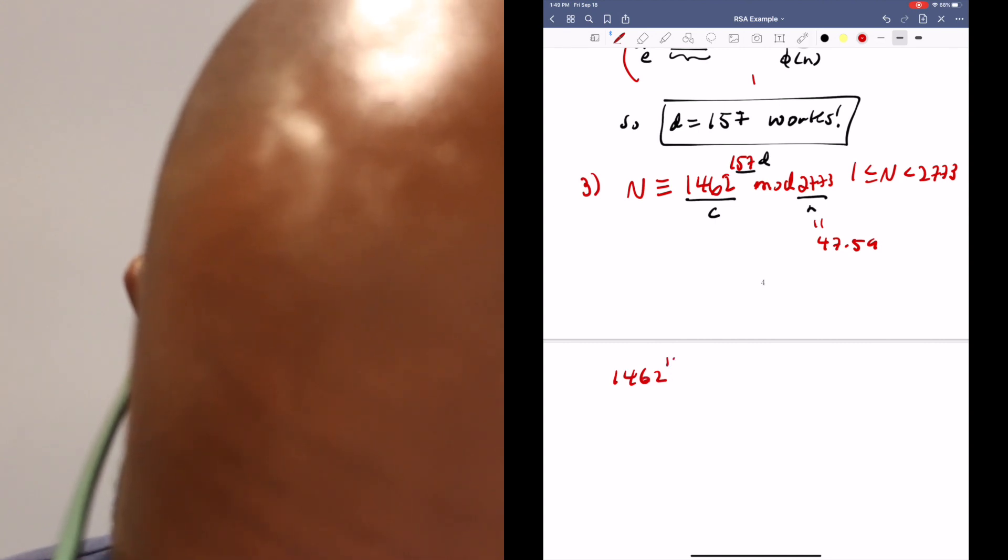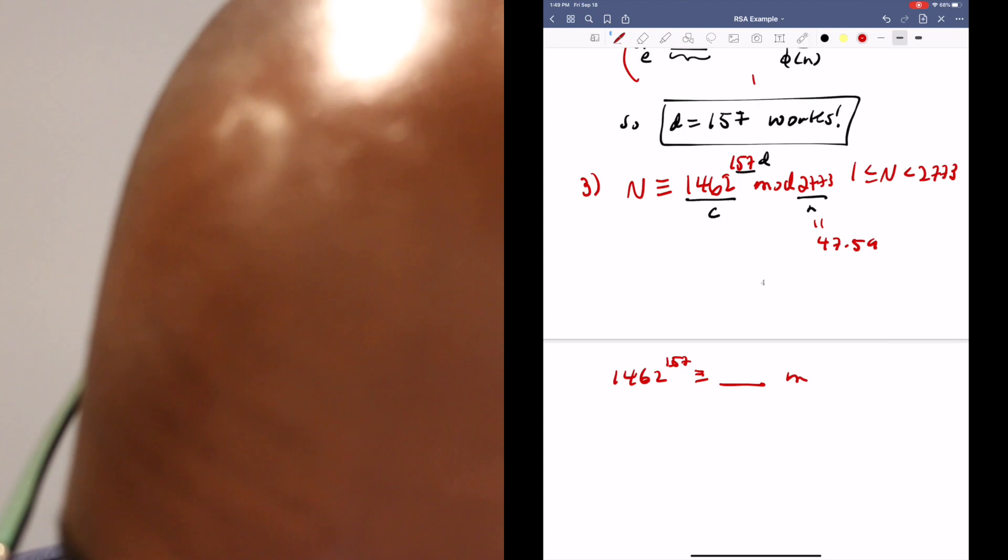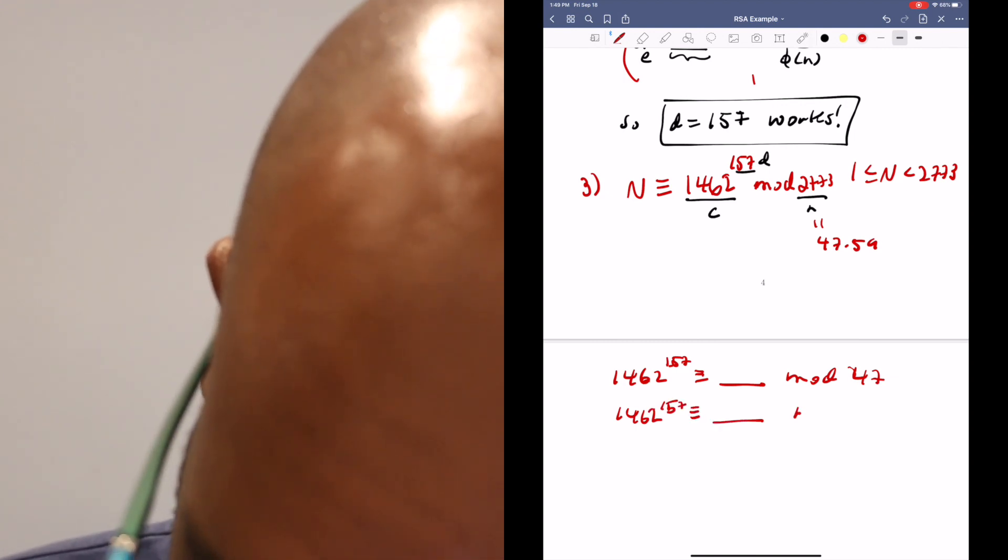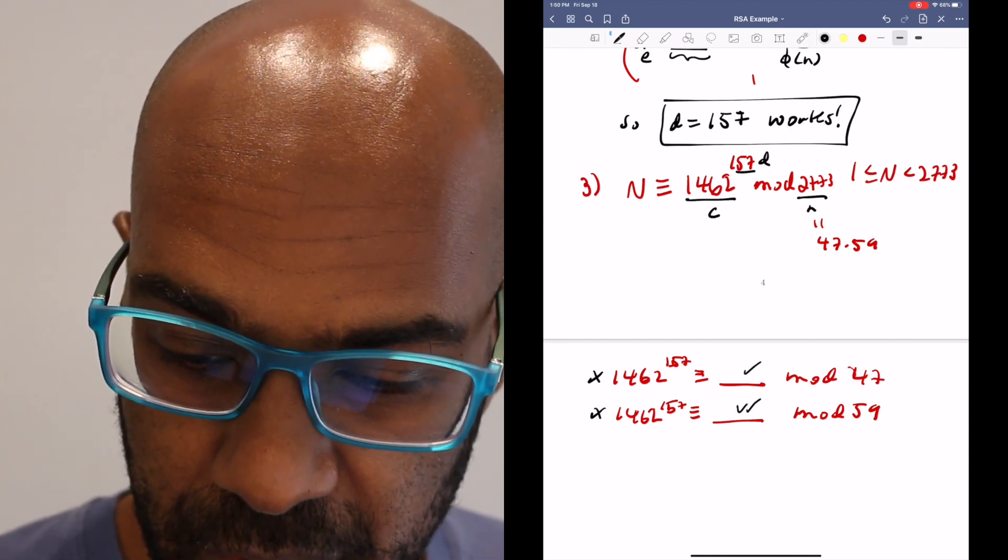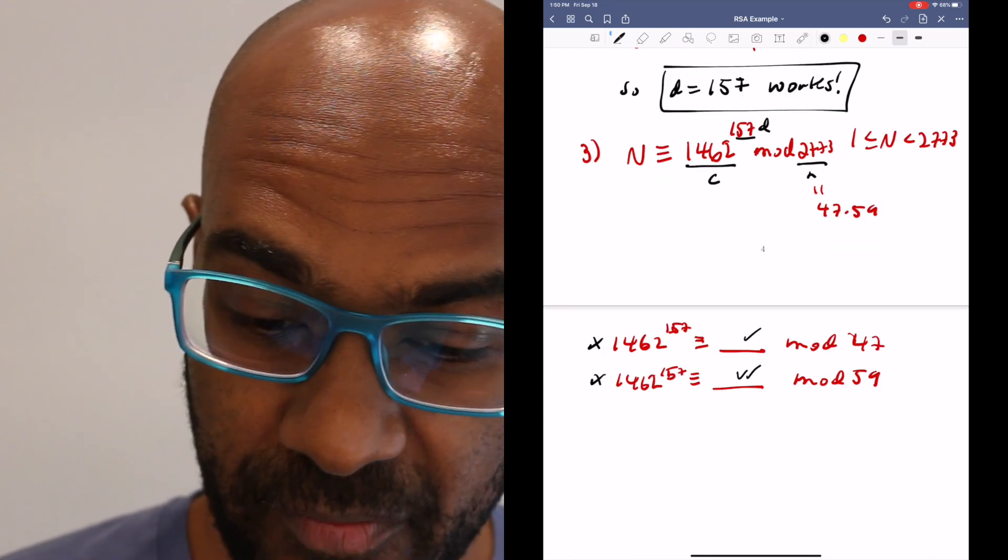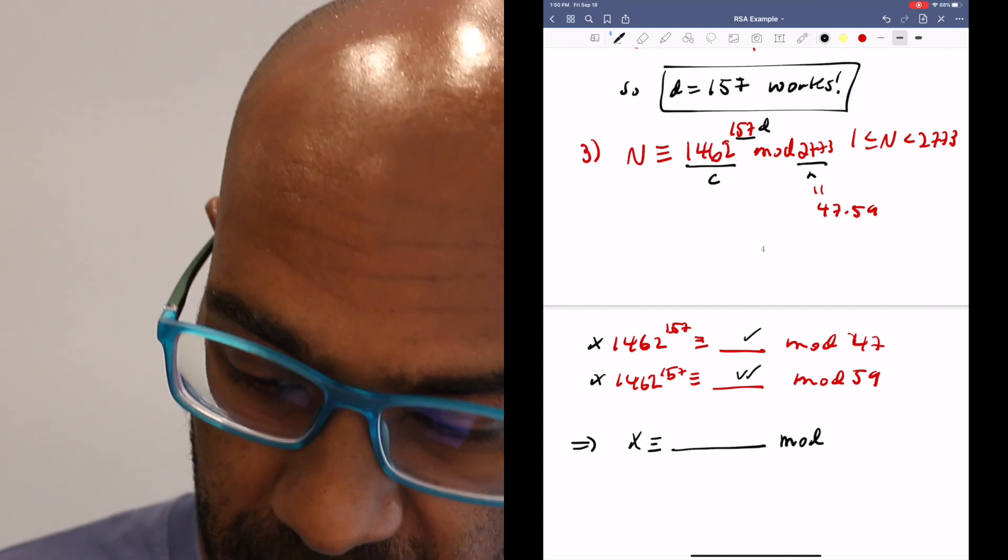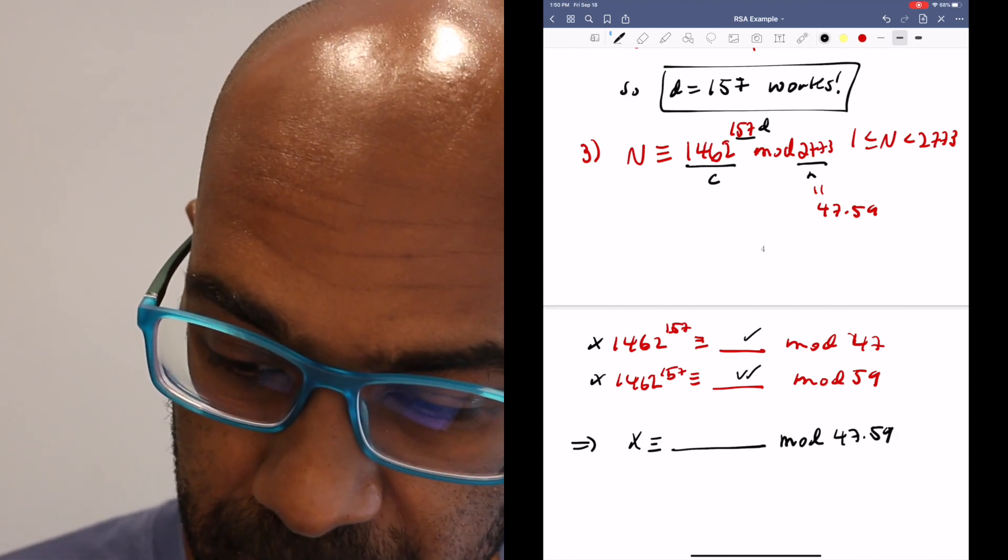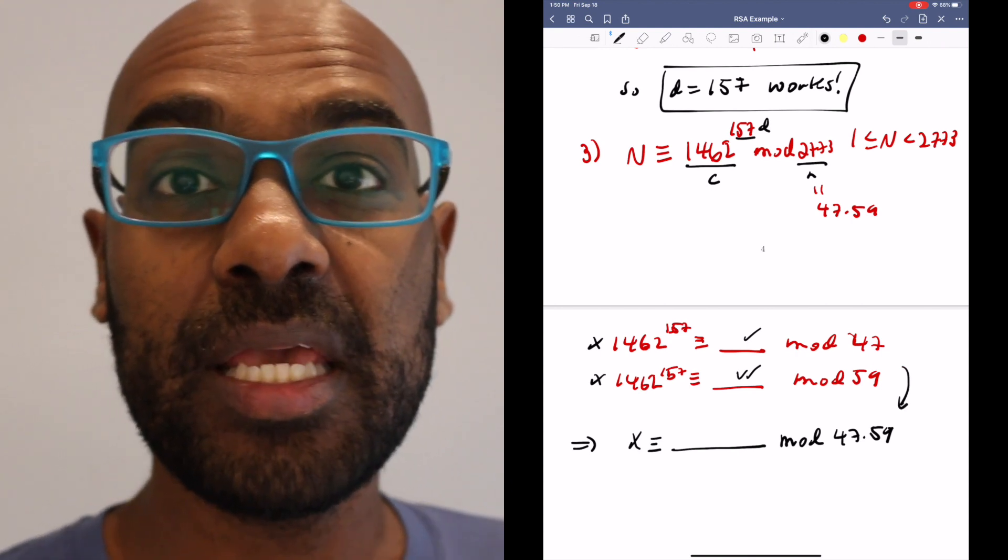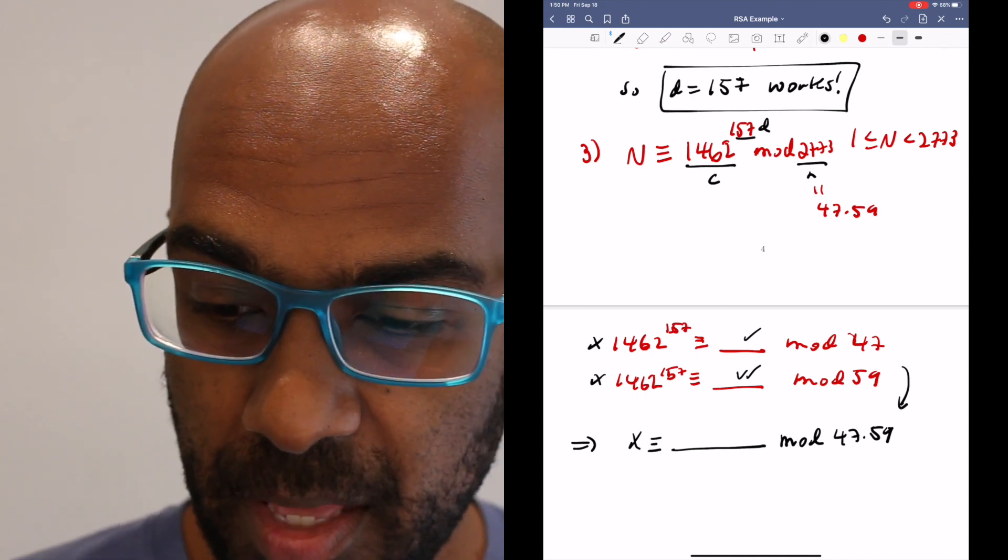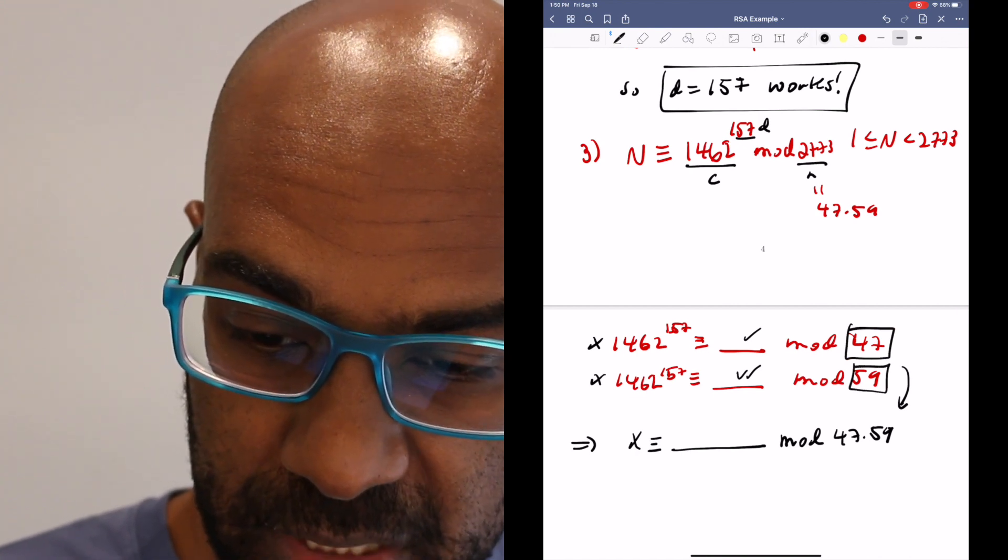Bob is the one who's doing this, and Bob knows that this number is 47 times 59. What Bob can do instead is figure out what 1462 raised to the 157 is when reduced modulo 47, and also what it is when reduced modulo 59. Why that helps is this is a number x, and then you'd have two numbers filled in here for what x is mod 47 and what x is mod 59. This will imply that x is a unique particular number modulo 47 times 59 that you can actually compute using the theorem we talked about in a previous video on solving systems of linear congruences. The advantage of doing that is that you're working with smaller numbers instead of working with this very large 2773.